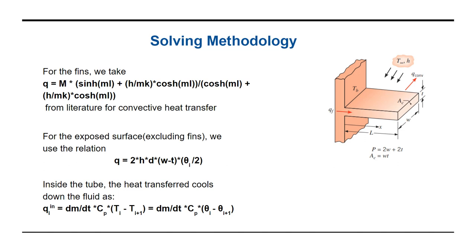Now inside the tube the heat transfer cools down the fluid as this equation which reads as qi in is equal to dm by dt into Cp into Ti minus Ti plus 1 is equal to dm by dt into Cp into Theta i minus Theta i plus 1. Equating the heat loss outside with the cooling effect inside we get Theta i plus 1 is equal to A under root of Theta i plus B into Theta i. We iterate this to find qn and subsequently find q total out is equal to q.